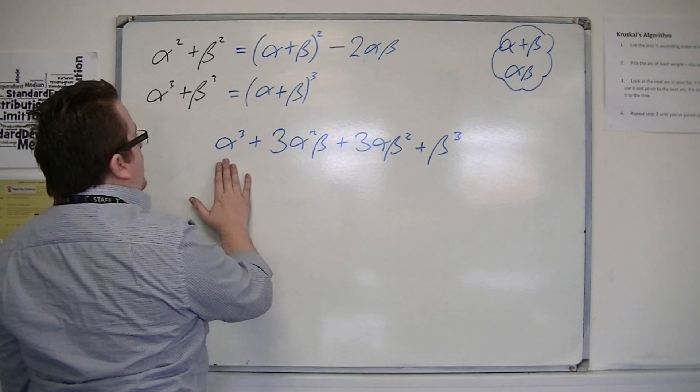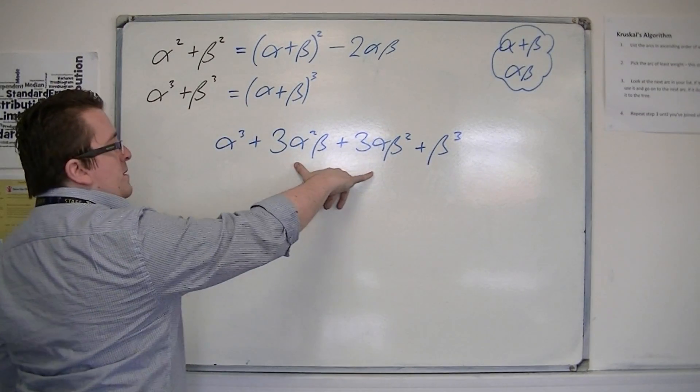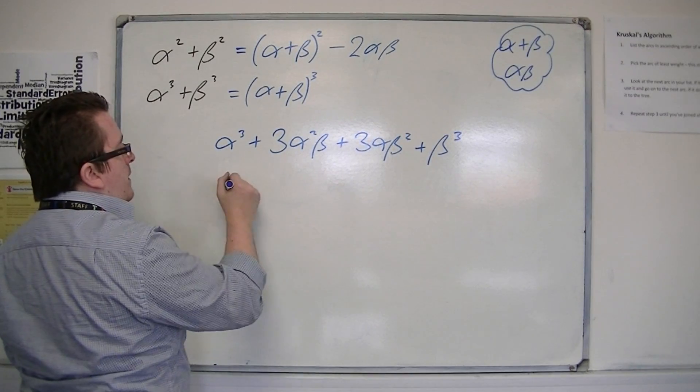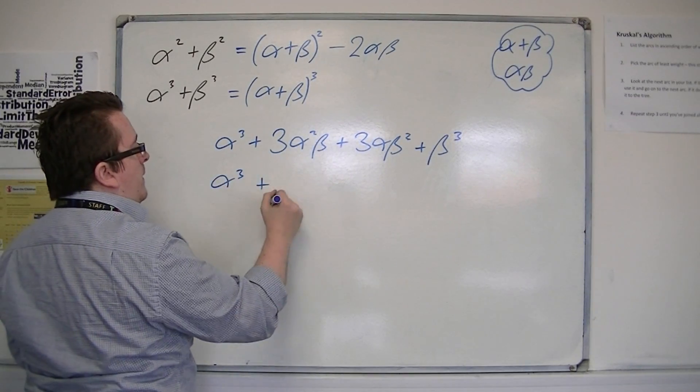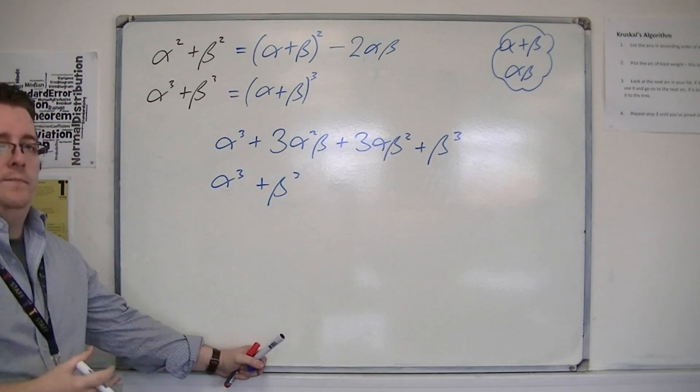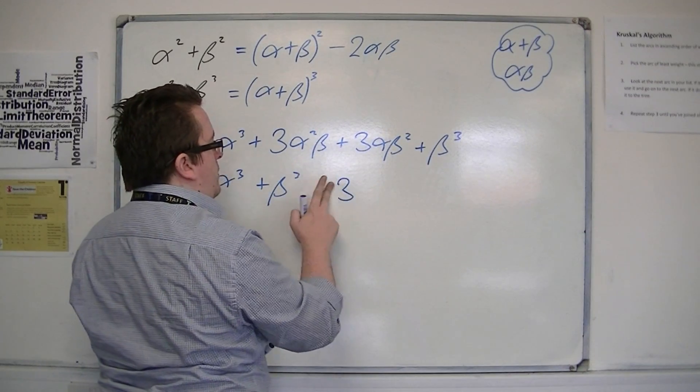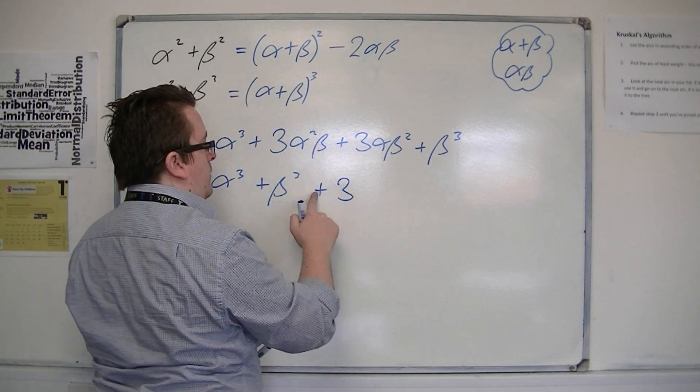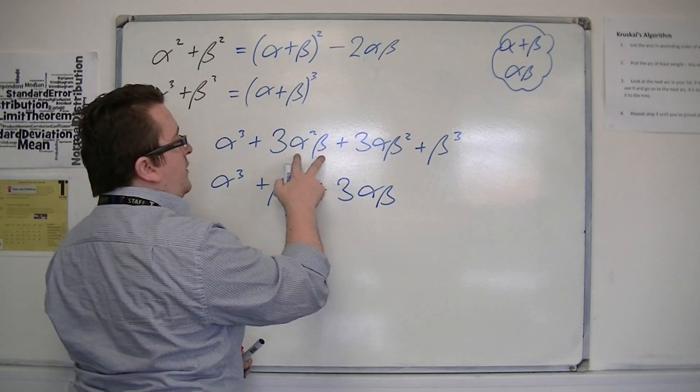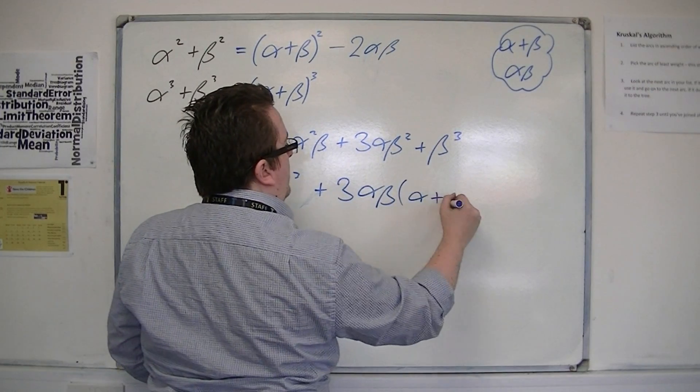We've got the alpha cubed that I want. I've got the beta cubed, but I've got these bits in between. I want to be able to write them in such a way that I'm getting alpha betas and alpha plus beta. If I factorize this, I can get 3 lots of alpha beta, because they both have alpha beta in them, times alpha plus beta.